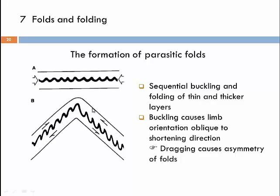In the hinge, the shortening direction remains the same, and the layer is in much the same orientation as in the early state of deformation, causing symmetric folds of a similar shape in the hinge. The folds on the limbs are called Z folds on one side and S folds on the other, because the short-long limb relationship is mirrored. The symmetric ones in the hinge are called MW folds because of their symmetric shape.